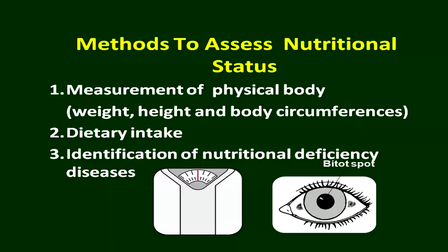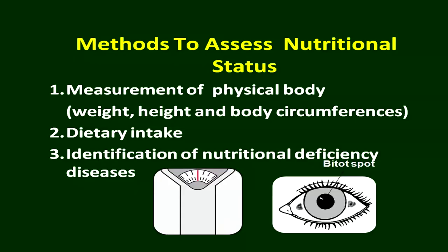How will we understand how to assess these things? Mainly there are three methods. Number one: measurement of the physical body in terms of weight, height, and body circumferences. Body circumferences can be your girth body circumference, your head, or your arm — which is called mid-arm circumference. Second method is dietary intake. Third is identification of nutritional deficiency diseases.